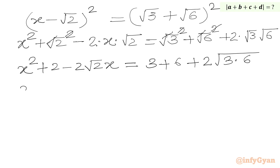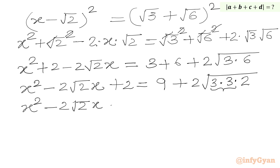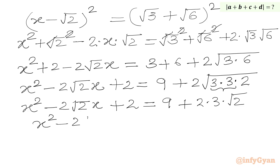Now we can write x squared minus 2 root 2 times x plus 2 equal to 3 plus 6, which is 9, plus 2 times square root of 18. Since square root of 18 equals 3 times square root 2, this simplifies to: x squared minus 2 root 2 x plus 2 equals 9 plus 6 square root 2.